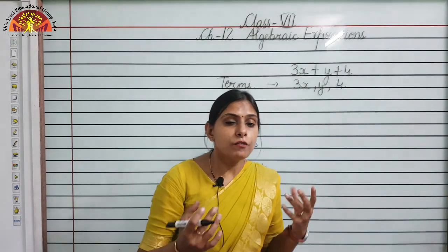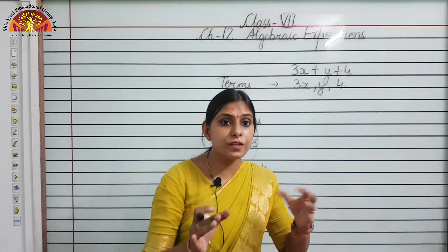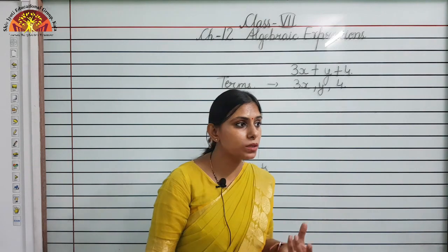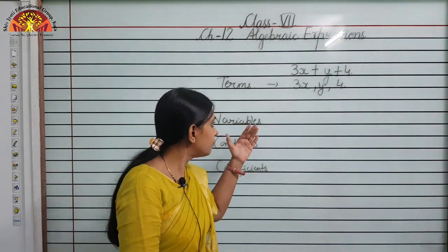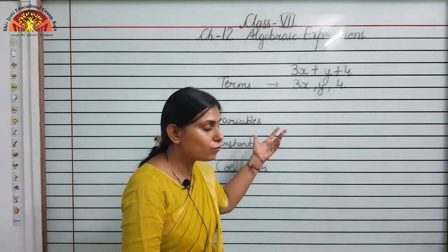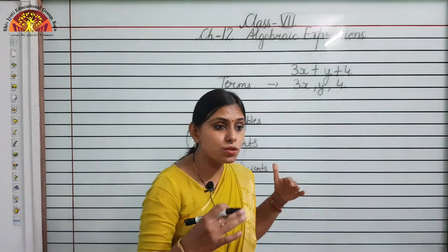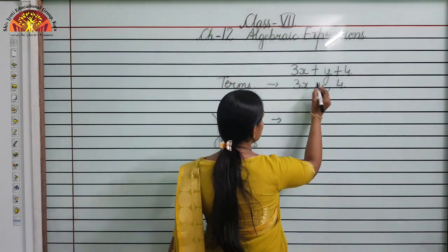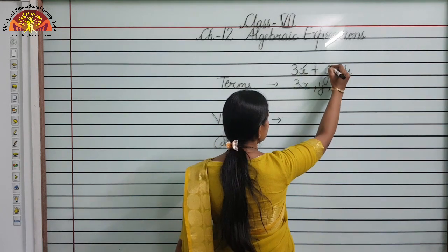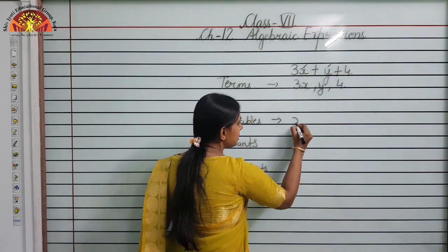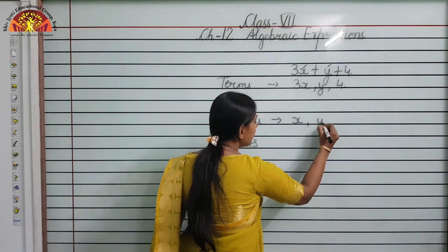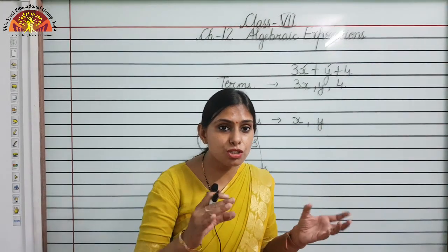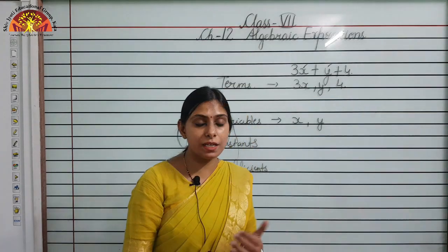What are variables? A variable is something that keeps on changing — jo cheez continuously change hoti hai, usko hum variable bolte hain. So here, in this algebraic expression, x and y are the variables — the values which keep on changing.